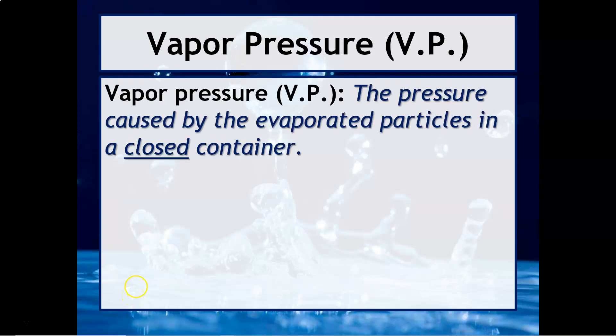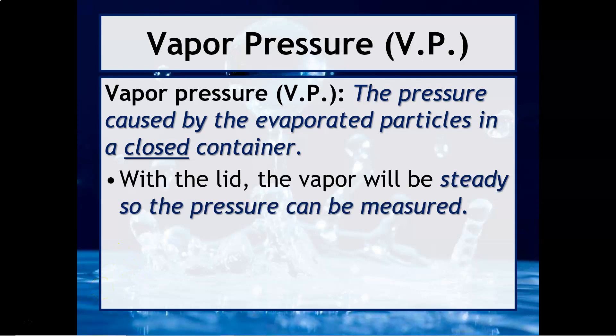Vapor pressure is defined as the pressure caused by the evaporated particles in a closed container. Usually we'll measure this with a lid, because if we have a lid or a cap the vapor pressure will be steady above the liquid, so the pressure can easily be measured. Remember, pressure is a measure of gas particle collisions — the force of gas particles. So when we talk about vapor pressure, we're literally just talking about the pressure of the vapor above the liquid that has converted into a gas.